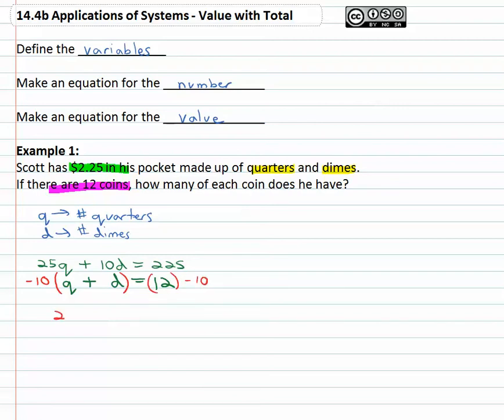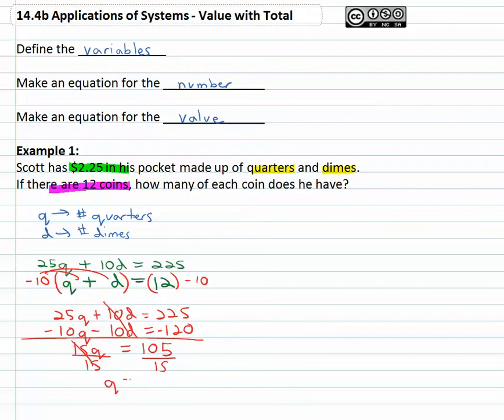So the first equation is still 25q plus 10d equals 225. The second equation multiplying by ten gives us negative 10q, negative 10d equals negative 120. And so when we combine, the dime subtracting out gives us 15 quarters is equal to 105. Divide both sides by fifteen and we get the number of quarters is equal to seven.